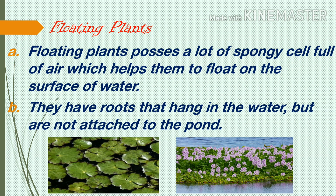Floating plants. Plants that float on water are called floating plants. Examples include duckweed, mosquito fern, water hyacinth, and water milfoil — these are free-floating plants. These plants possess many spongy cells full of air which help them float on the surface of water. Floating plants have roots that hang in the water but are not attached to the pond bottom.